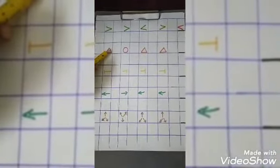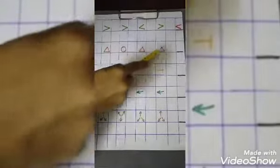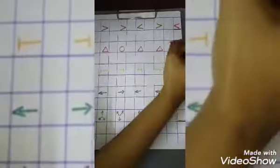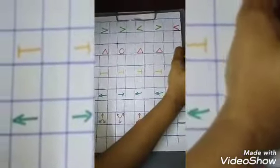Next, shapes. Triangle, circle, triangle, triangle. Which is different? Circle is different.